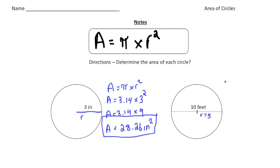So again, just like before, always write down the formula. So area equals pi times radius squared. And then area will be 3.14 times 5 squared.